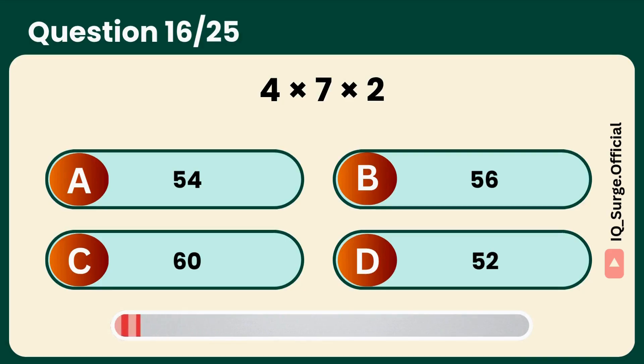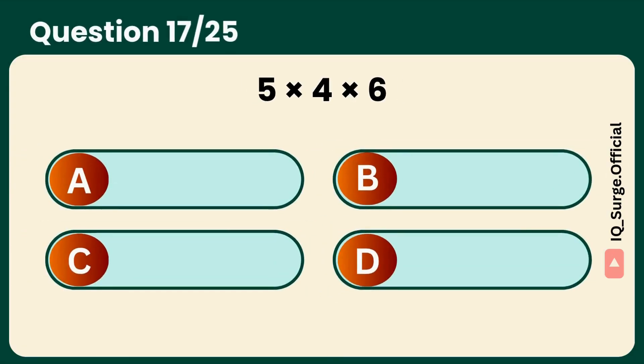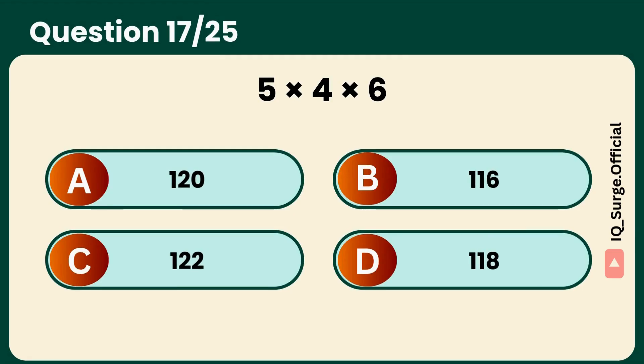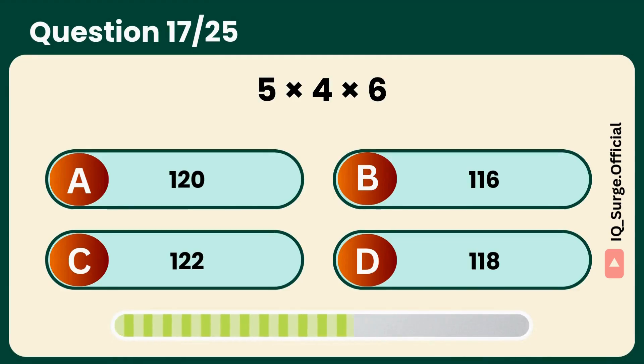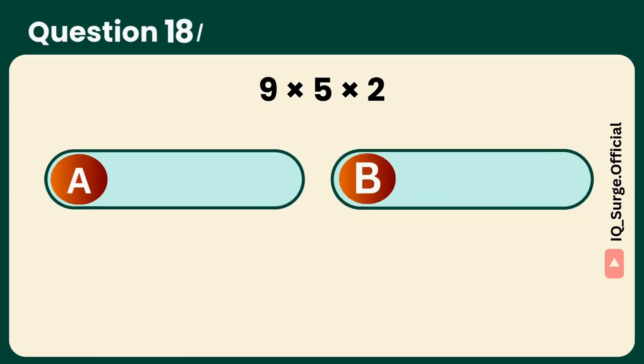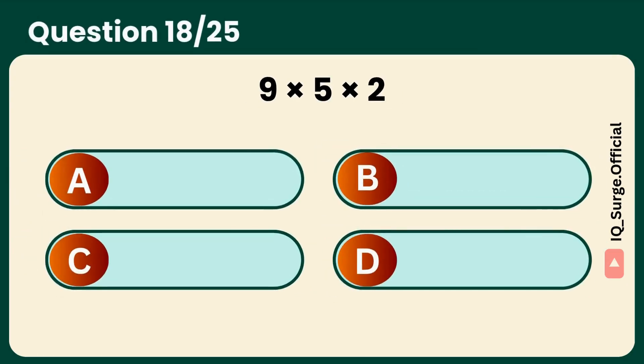What is 4 times 7 times 2? Quick solve. Answer: B, 56. What is 5 times 4 times 6? Big numbers, go. Answer: A, 120. What is 9 times 5 times 2?